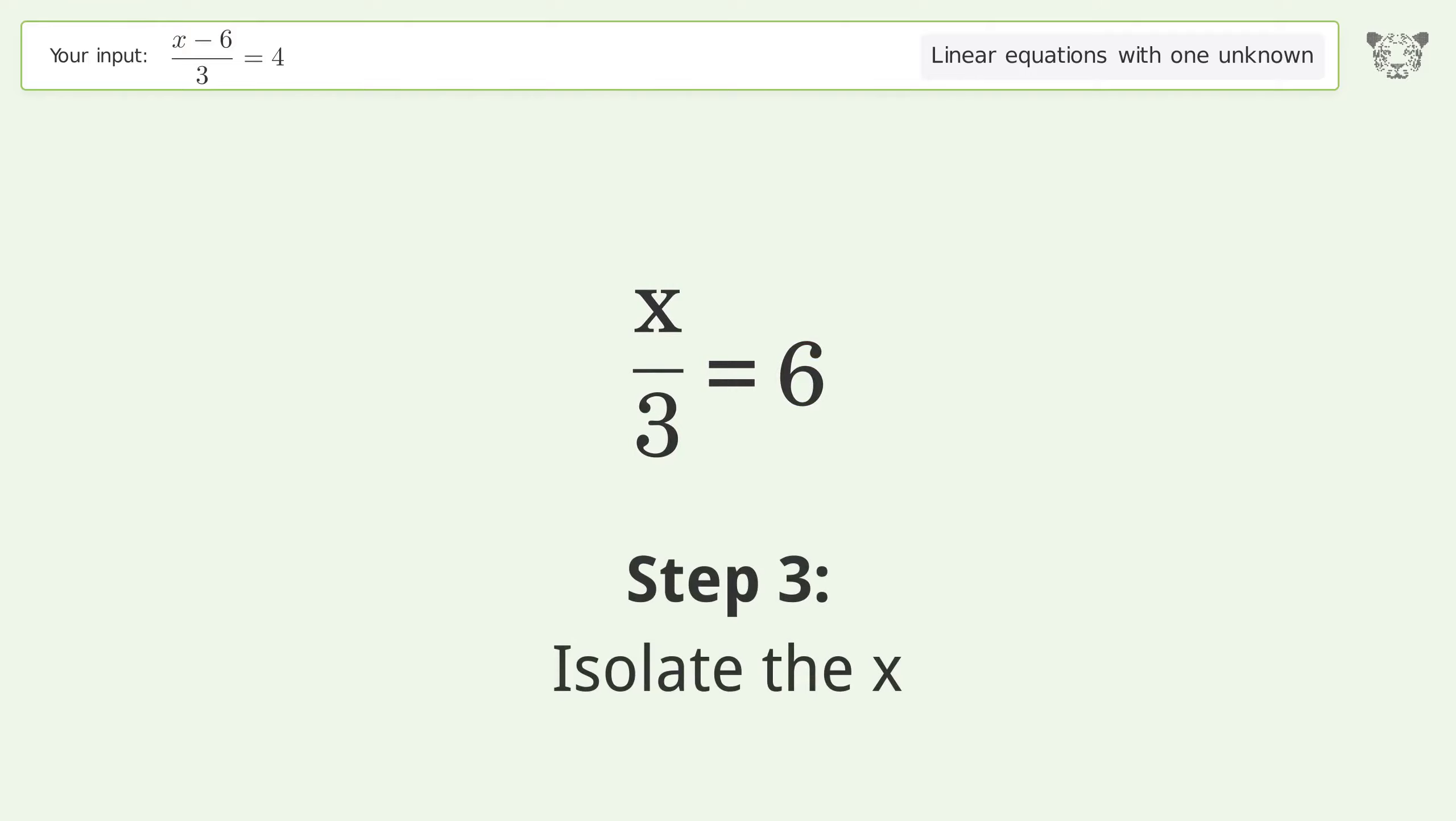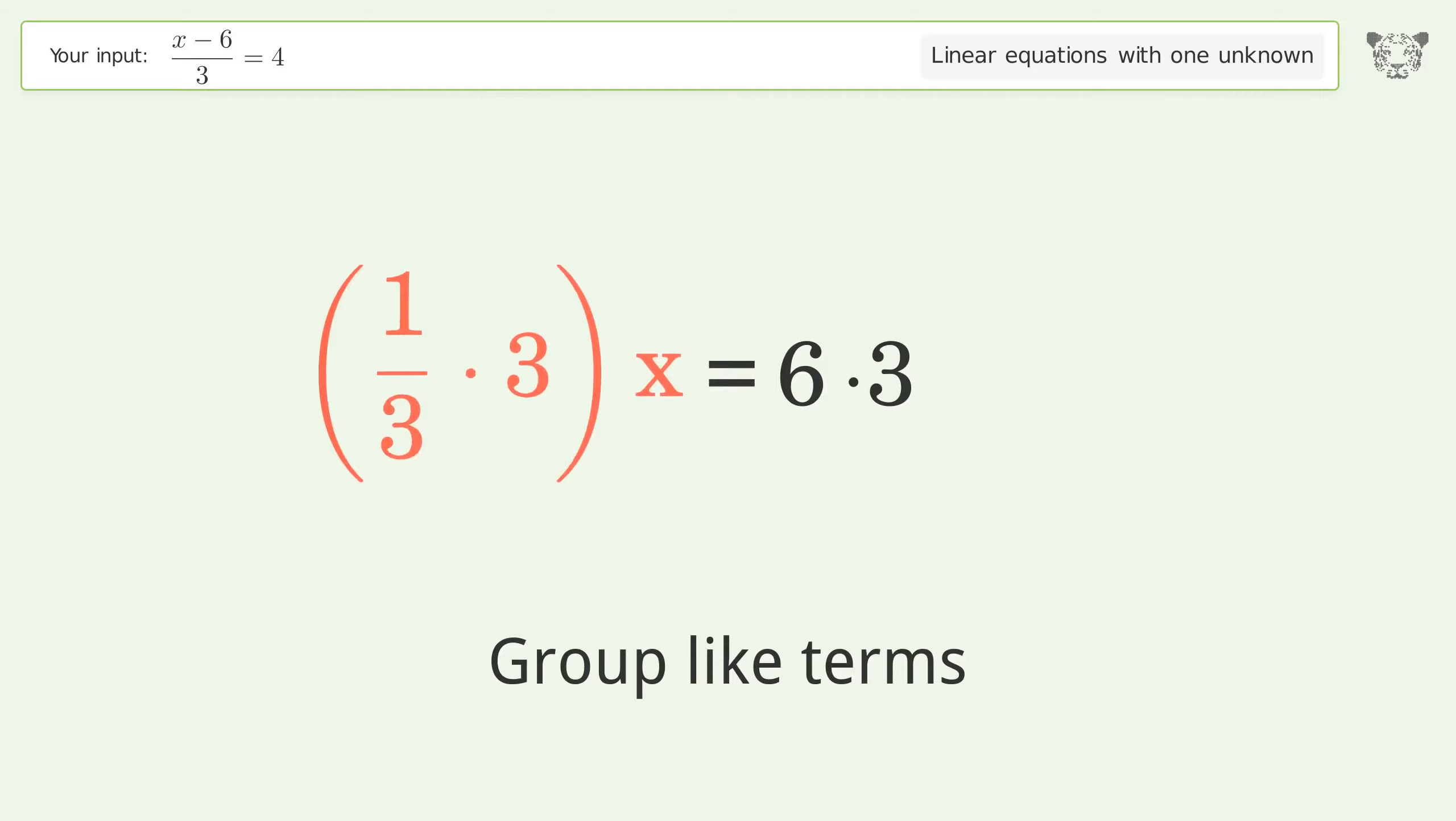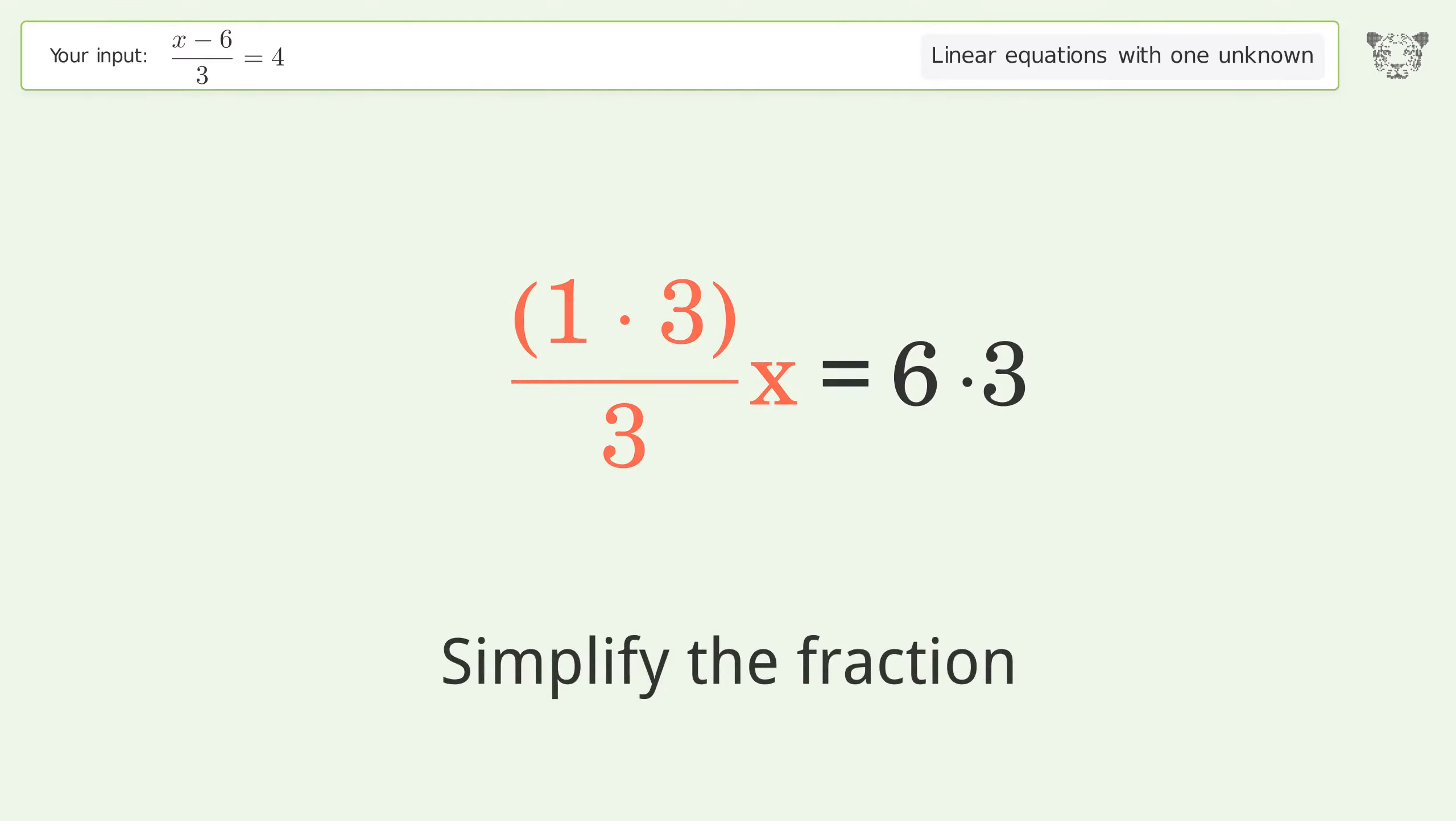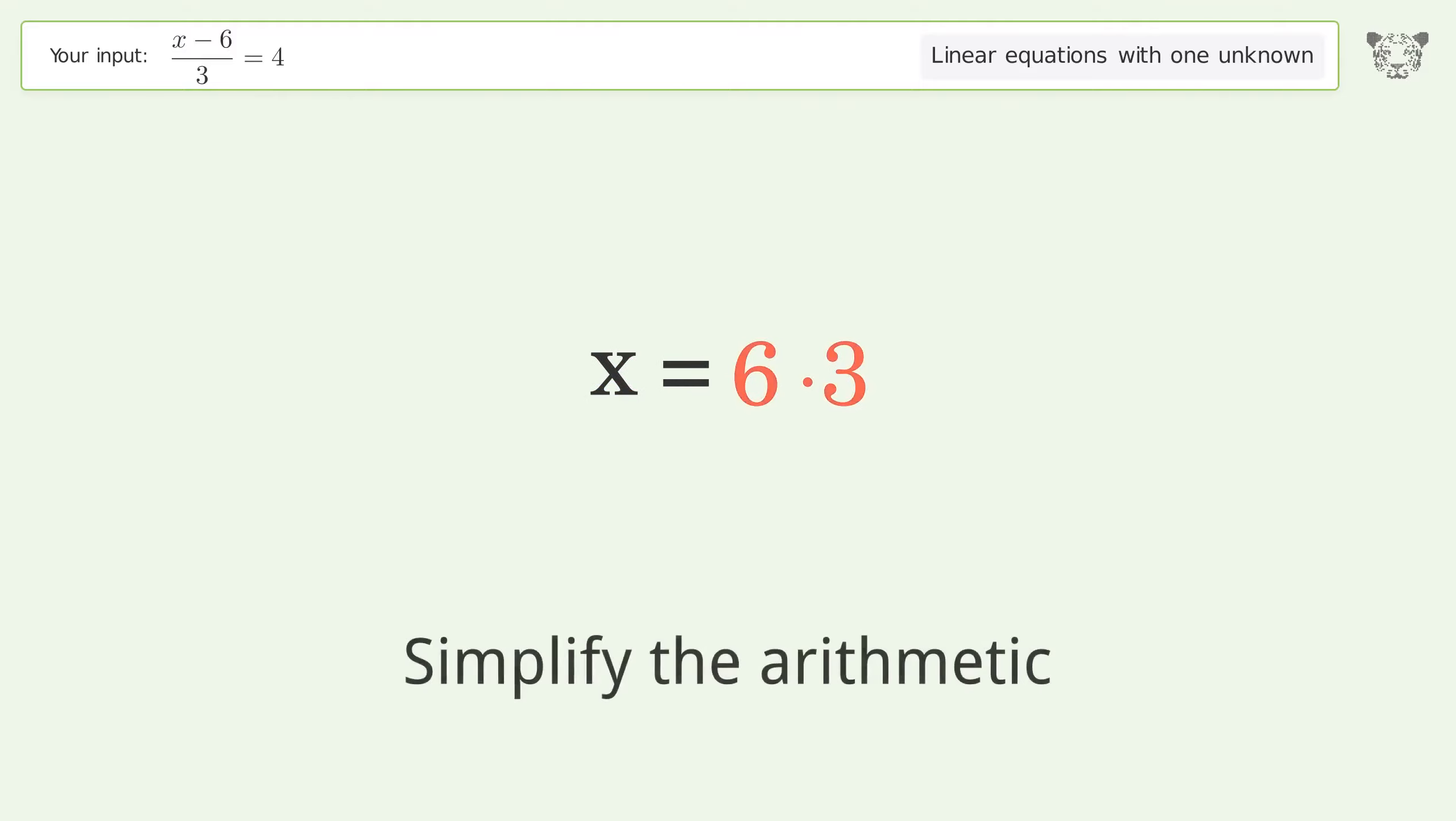Isolate the x. Multiply both sides by 3. Group like terms. Multiply the coefficients. Simplify the fraction. Simplify the arithmetic.